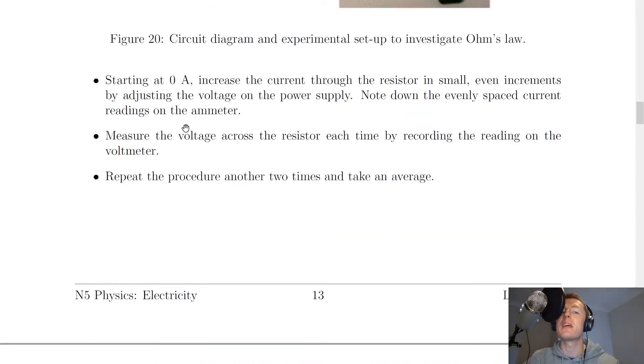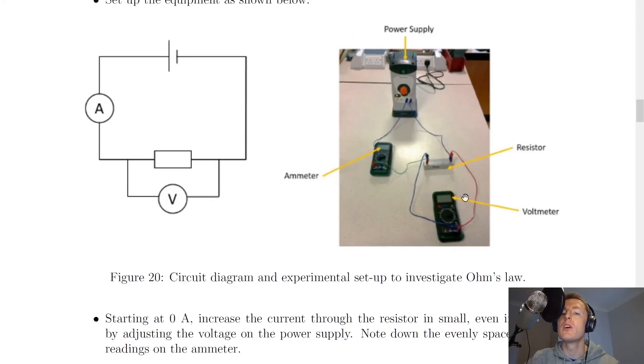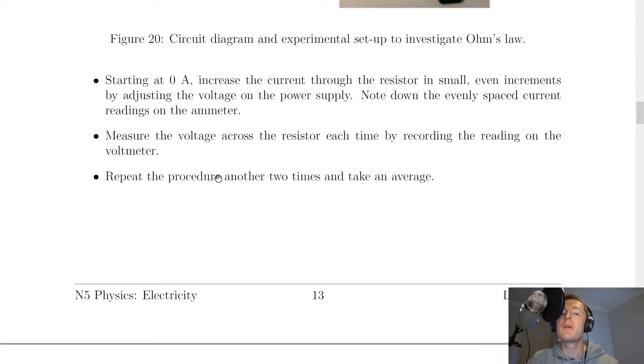Once you had written down your evenly spaced current readings and adjusted to each of those, you would measure the voltage across the resistor each time by recording the reading on the voltmeter. So you would look at this reading here and write down that reading. You would then repeat the procedure another two times and take an average, as this is going to make the results more reliable.